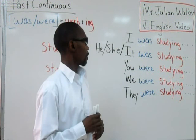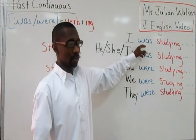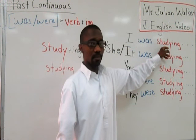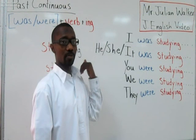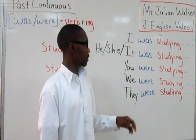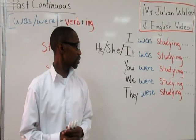Here I have: I was studying. The B form of the verb was is in the past, and study is the base form with ing. I was studying — this shows something I was doing in the past. He, she, it was studying. You were studying. We were studying. They were studying.